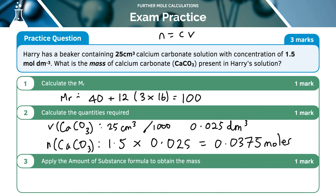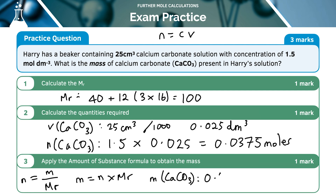From the previous tutorial, we can use moles and MR to find mass. Moles equals mass over MR, rearranged to mass equals moles times MR. Therefore, the mass of calcium carbonate is 0.0375 times the MR of 100, giving 3.75 grams. That is the answer.